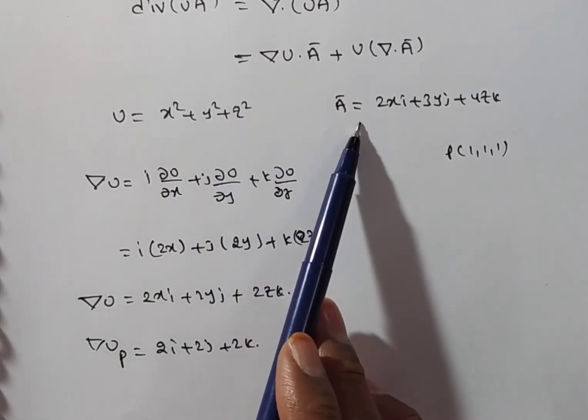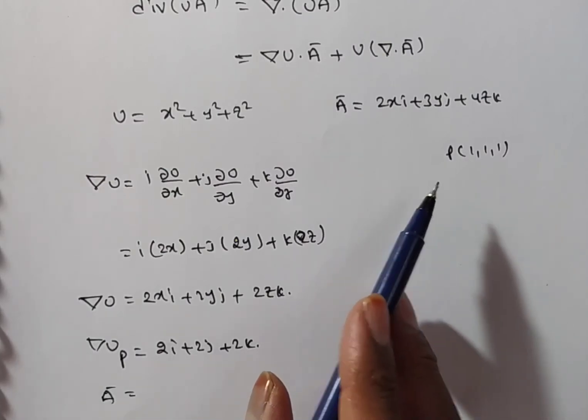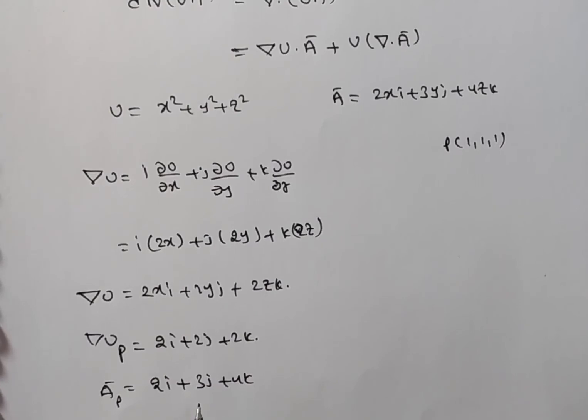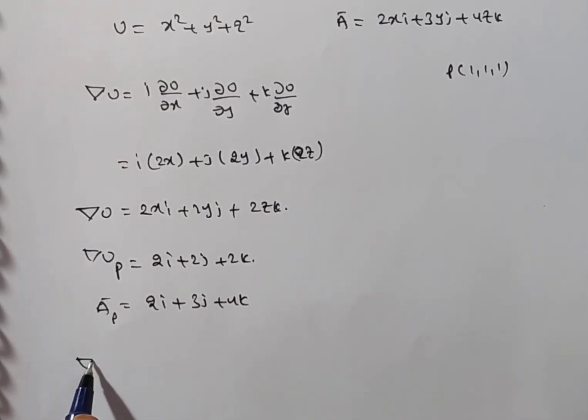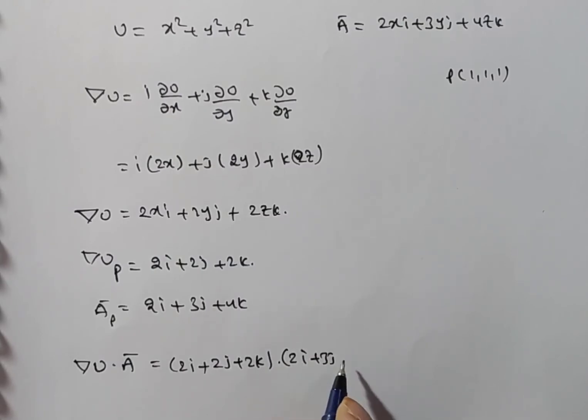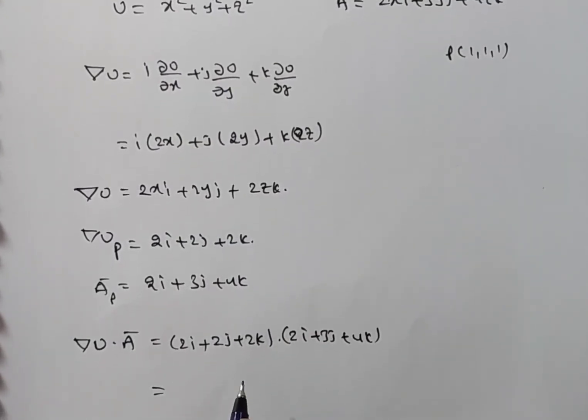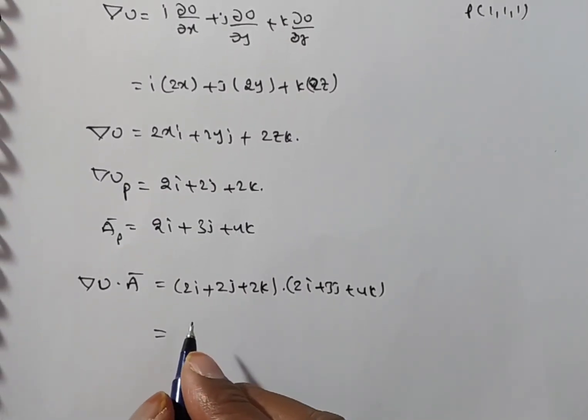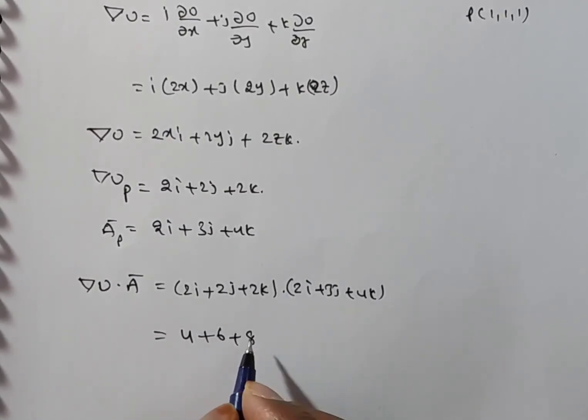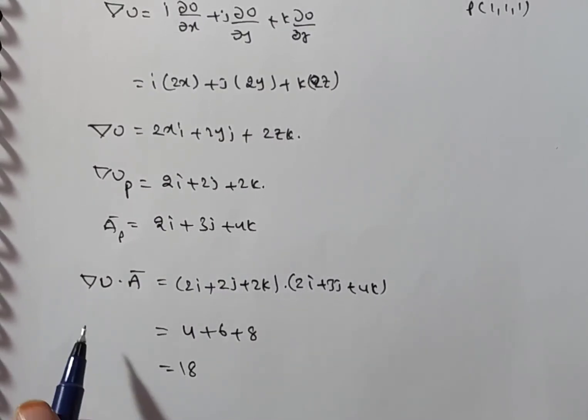Dot a bar. A bar at the point p is you have 2i plus 3j plus 4k. Now, I want del u dot a bar. Can I do multiplication here? Yes. You can do easily. Now, del u dot a bar. You see, del u is a vector. A bar is a vector. Dot product of the two vectors. That is, first I am writing the vectors. 2i plus 2j plus 2k dot 2i plus 3j plus 4k. Now, dot product of the two vectors. I dot i is 1, j dot j is 1, k dot k is 1. Rest of all are 0. 2 into 2, 4. 2 into 3, 6. 2 into 4, 8. So, how much this is? 18. The del u dot a bar is 18.